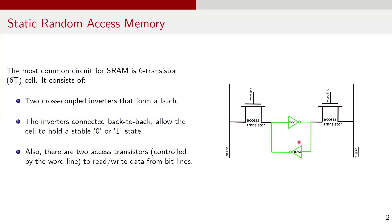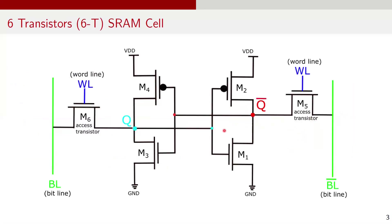The inverters connected back-to-back allow the cell to hold a stable 0 or 1 state. Also, there are two access transistors controlled by wordline to read and write data from bitlines. Here is the complete digital circuit for the 6T SRAM cell. It consists of six transistors labeled from M1 to M6. The transistors M5 and M6 act as access transistors that control access to the cell based on the value of the wordline WL at their gates.